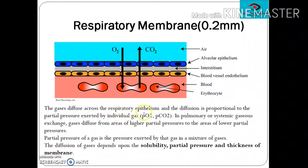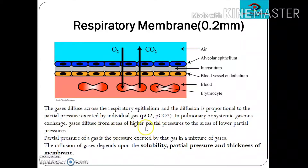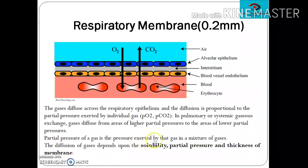The gases diffuse across the respiratory epithelium, and the diffusion is proportional to the partial pressure exerted by the individual gas, represented by PO₂ and PCO₂. In pulmonary or systemic gaseous exchange, gases diffuse from areas of higher partial pressure to areas of lower partial pressure. Partial pressure of a particular gas is the pressure exerted by that gas in a mixture of gases.